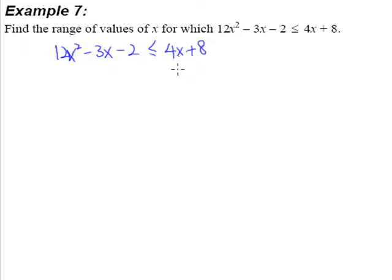Now, first thing first, we must always make sure that the quadratic inequalities, at the right hand side, it has to be a 0. So we have to shift the 4x over. So we have 12x² - 3x - 4x will give me -7x. So -2 - 8 will give me -10, will be less than or equal to 0.